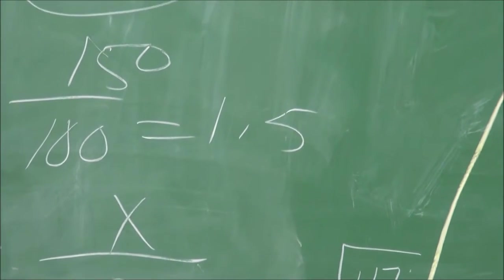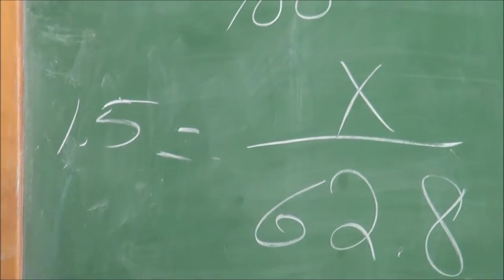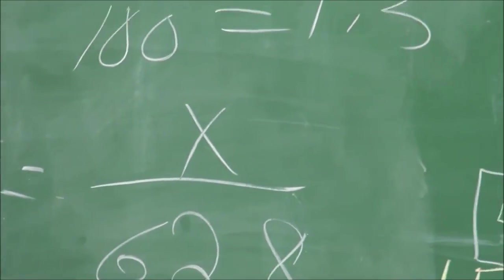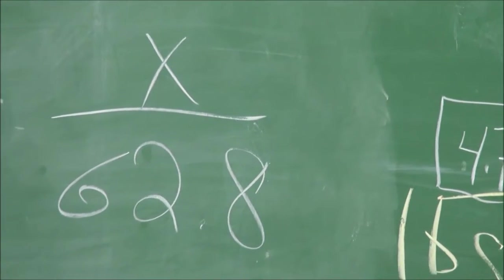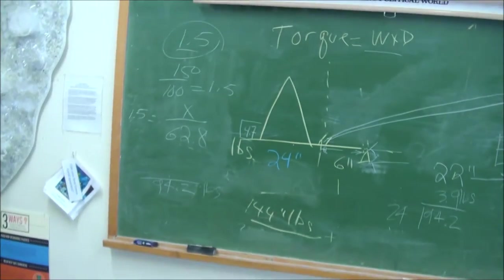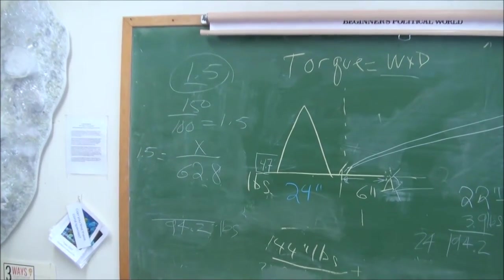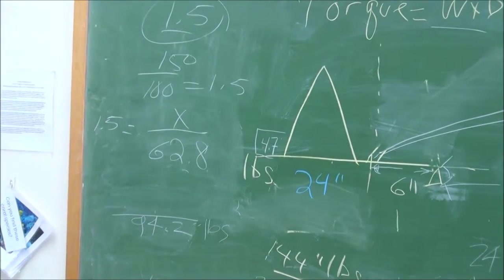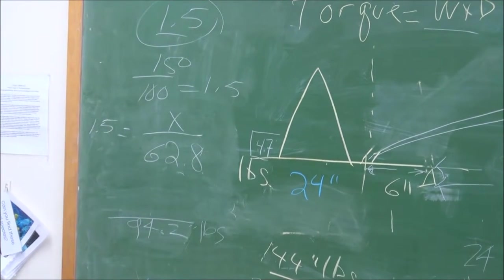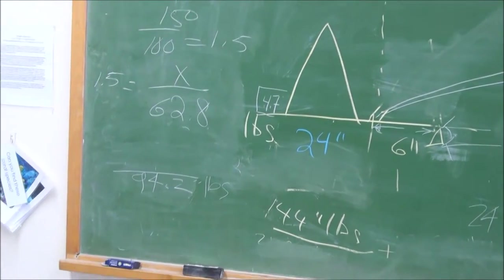Now the next line we have 1.5, that's the safety factor. And that's the same as x divided by 62.8. So we have a safety factor of 1.5, and so we have 62.8 inch pounds, but we have to multiply that by 1.5 to get the number: 94.2 inch pounds.